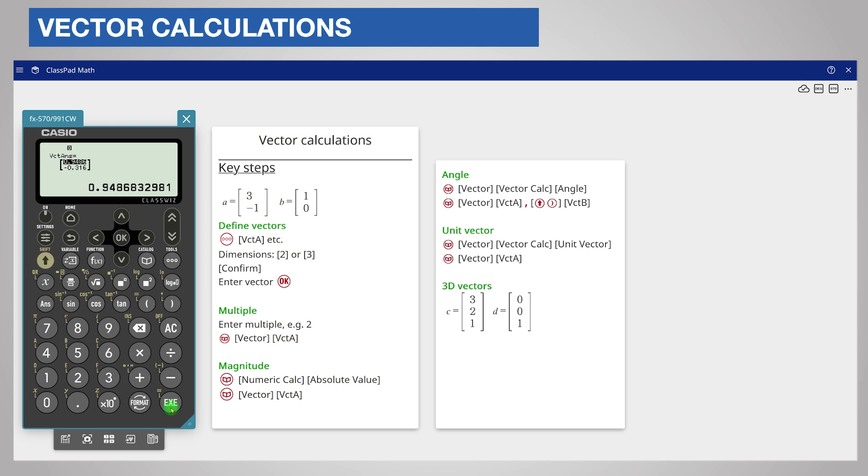You can use these calculations with vectors in three dimensions. For example, to find the angle between vector C given on the right and the positive z-axis. Enter your vectors as before. I have already done this for vector C and a direction vector [0, 0, 1] for the positive z-axis as vector D.